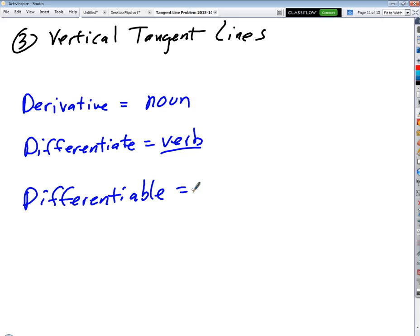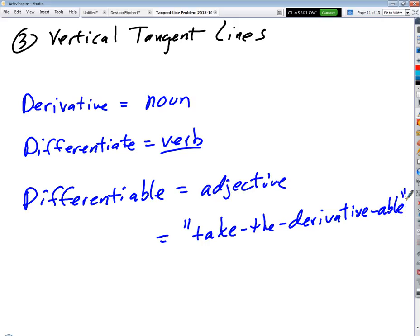Because it describes, but I would say adjective. Because what it really means is, here's what it means. A loose translation is take-the-derivative-able. A differentiable function is one that we can differentiate. Okay, it has a derivative.